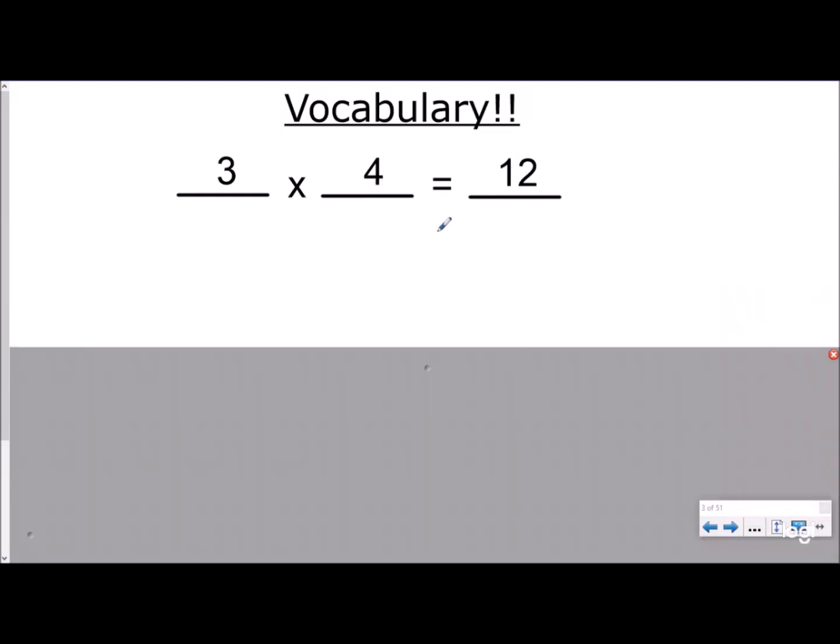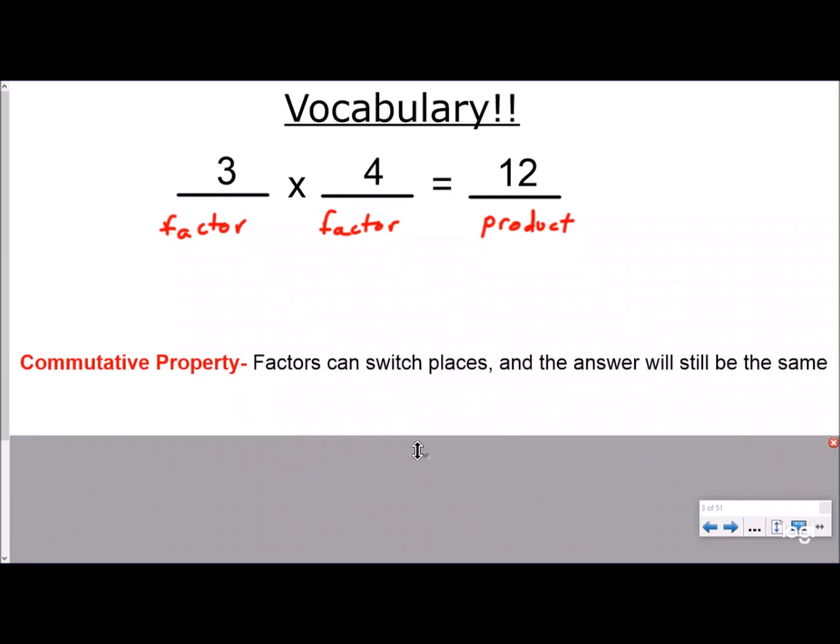So basic multiplication vocabulary. The numbers we multiply together, we call each one of those a factor. So factors are numbers that we're multiplying together, and the answer to a multiplication problem is called the product. So any digits we're multiplying or any numbers we're multiplying are called factors, and the answer to a multiplication problem is called a product.